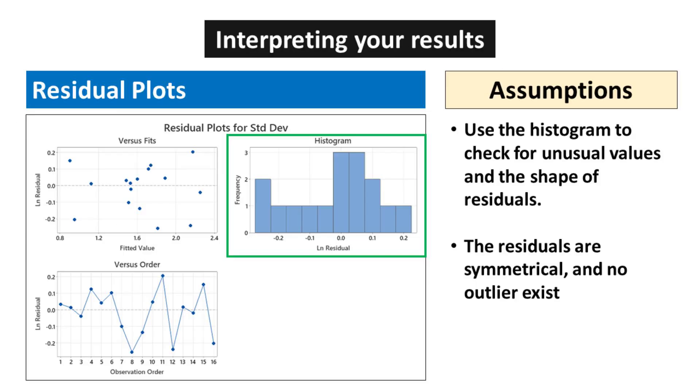The assumption of residual plot is a fundamental concept in regression analysis. The first assumption is that the residuals should be normally distributed. Another assumption is that the residuals should exhibit constant variance, also known as homoscedasticity. Additionally, the assumption includes that there should be no pattern in the residuals. Histograms are a useful exploratory tool for analyzing the characteristics of residuals in a statistical model. They provide a visual representation of the typical values, spread, and shape of the residuals. In this case, the histogram of the residuals shows no outliers, indicating that there are no unusually large or small residual values that could significantly impact the model.